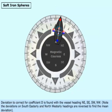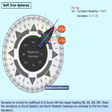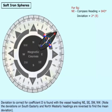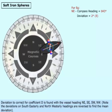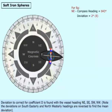Deviation to correct for coefficient D is found with the vessel heading northeast, southeast, southwest, and northwest. Note the deviations on southeasterly and northwesterly headings are reversed to find the mean deviation.